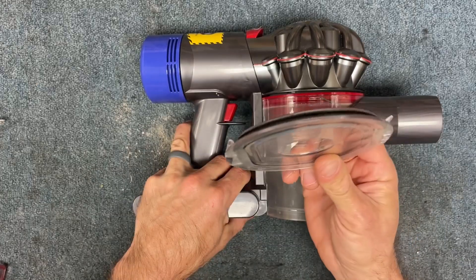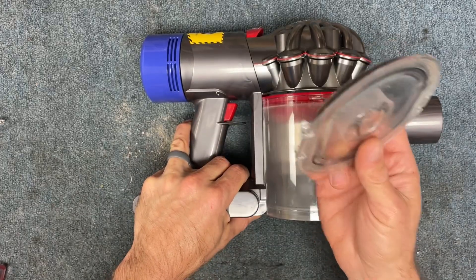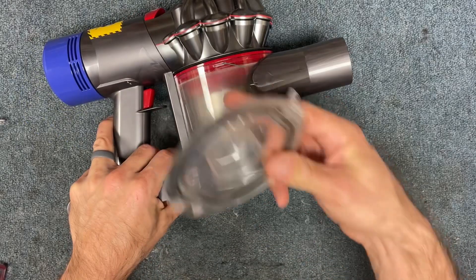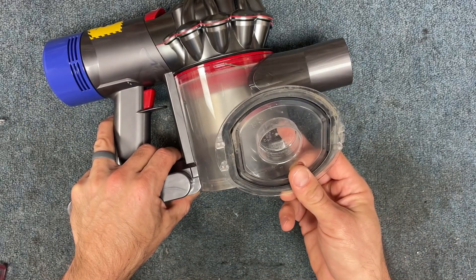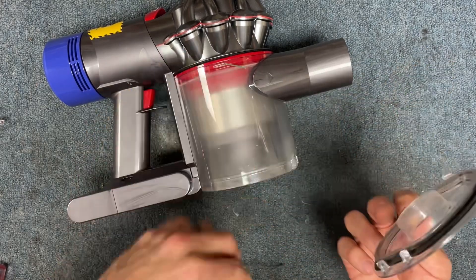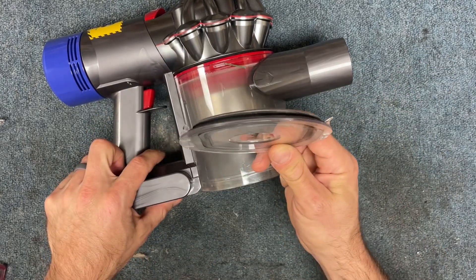Hey guys, I've had a few people tell me that they've had their dirt cup door fall off of this machine, and a few people ask me how exactly to put these back on.